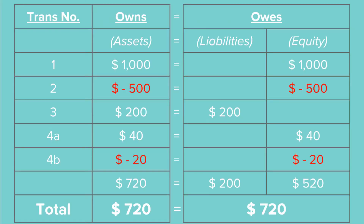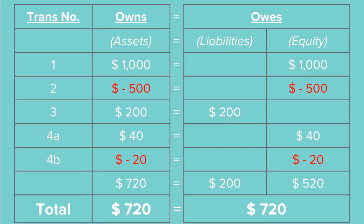Now it's time for Rachel to review her accounts and see the performance of her business. The business owns $720 and meanwhile the business owes $720 as well. The amounts on both sides are equal and balanced. Always remember: no matter how many transactions you have recorded, the accounting equation must always remain equal and balanced at all times.